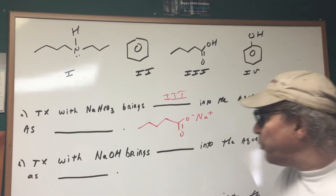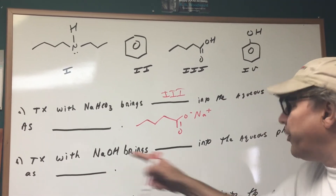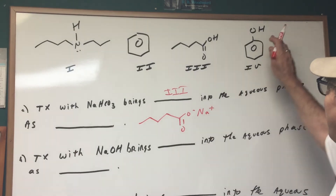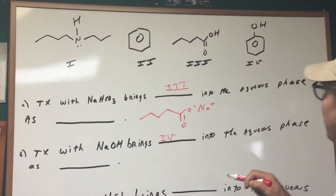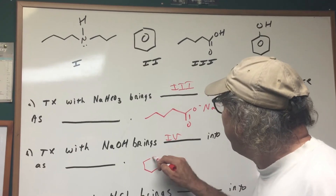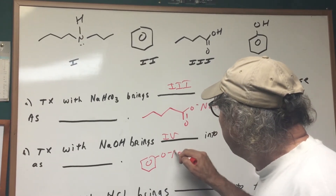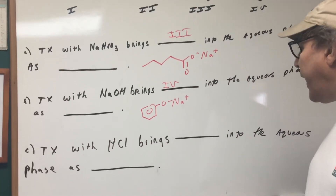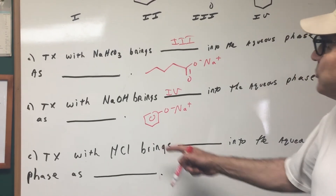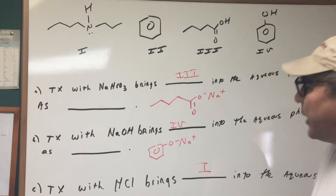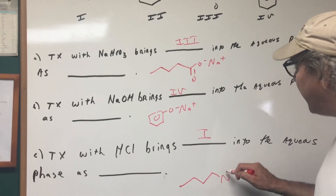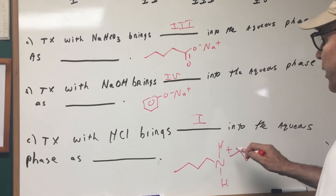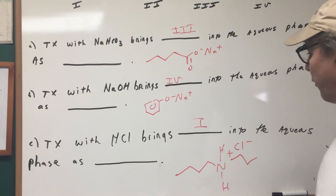Next, we're going to treat with NaOH. Treatment with NaOH brings blank into the aqueous phase as blank. The NaOH is going to react with number four — the phenol — and bring it in as the sodium phenoxide. That's in the aqueous layer. Finally, treatment with HCl brings blank into the aqueous phase as what? The HCl would react with number one — the amine — and bring it in as the dialkyl ammonium salt. That would be in the aqueous phase.